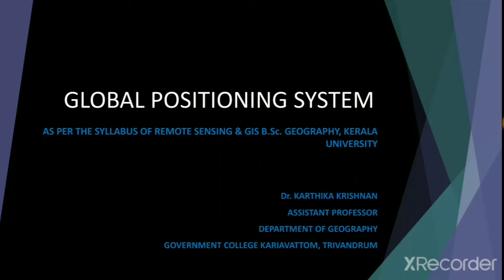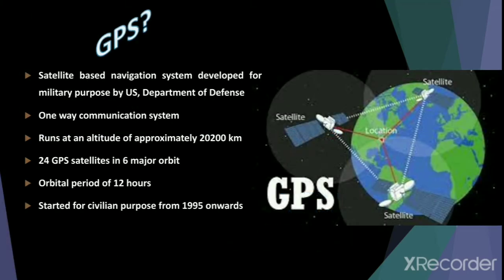Hello all, welcome back to remote sensing and GIS classes. In the previous session, we were discussing some of the major sources of spatial data used in GIS, and GPS, or the Global Positioning System, was one of the major in-situ sources of spatial data. In today's session, we will look into what is a Global Positioning System, what are the major segments of a GPS, and some of the major applications of GPS in today's world, along with some regional satellite systems of major countries. Let's begin.